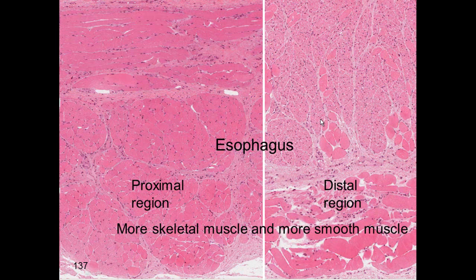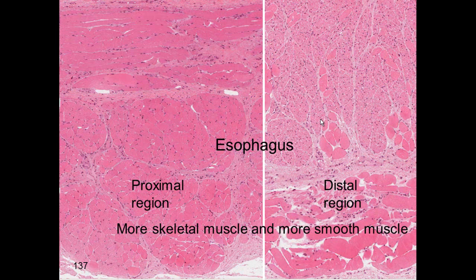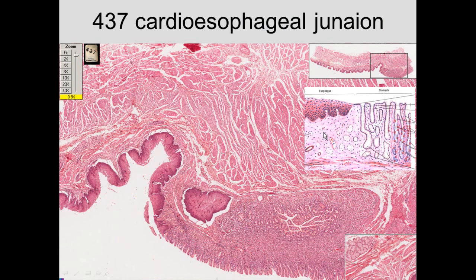In contrast, a dog would have skeletal muscle throughout its esophagus so it can regurgitate to feed its pups. Coming down from the esophagus with stratified squamous epithelium, there is an abrupt change to simple columnar epithelium of the stomach entering the cardia region, where you have mucus-type glands.